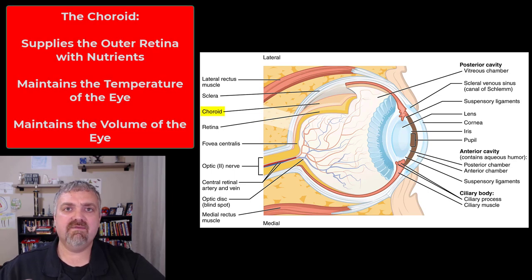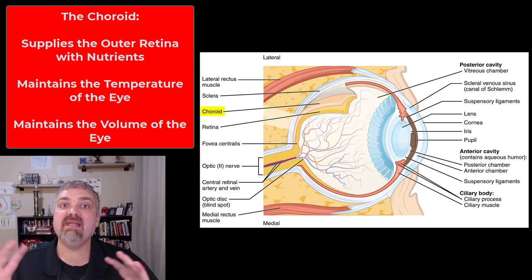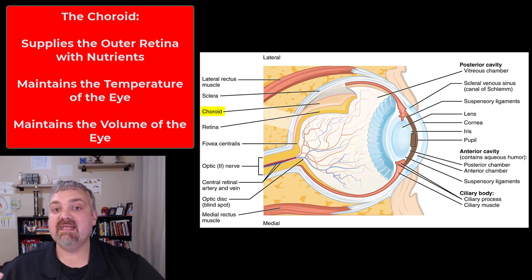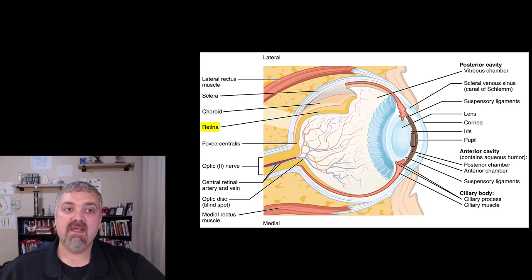The last part of the middle tunic is the choroid. The choroid supplies the outer retina with nutrients and helps maintain the temperature and volume of the eye.